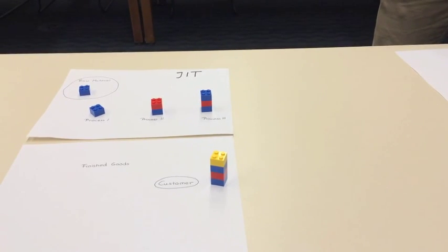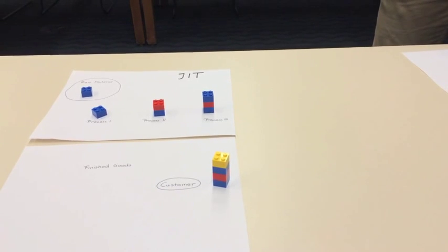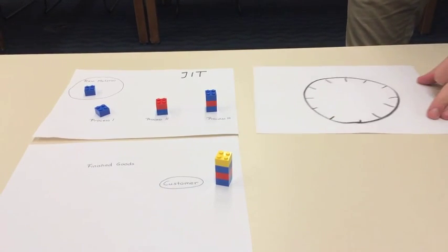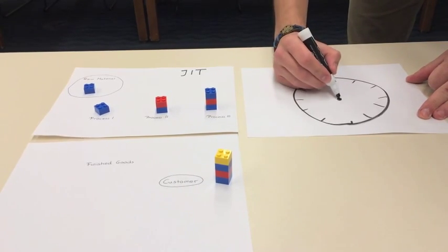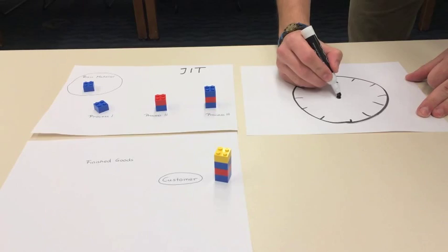To coordinate the pull system, the Toyota production system uses takt time. This means in which frequency products need to be produced in order to meet customer demand within the production time available.